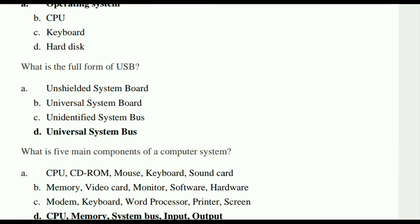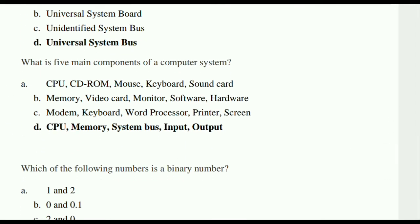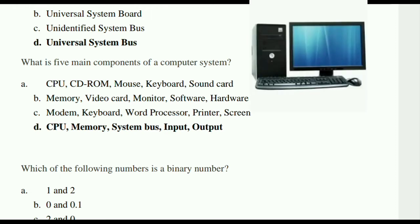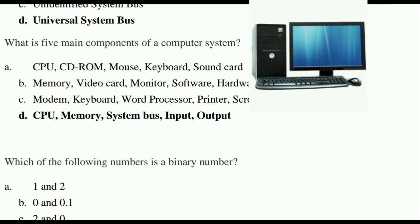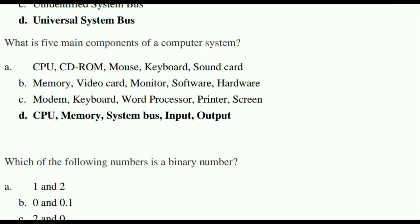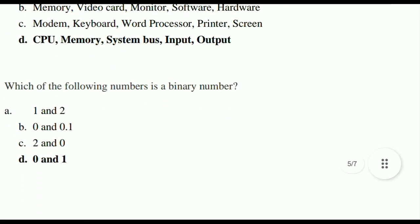What is the full form of USB? Universal Serial Bus. What are the five main components of a computer system? They are CPU, memory, system bus, input, and output. Which of the following numbers is a binary number? Binary numbers are 0 and 1 — 0 means off, 1 means on.